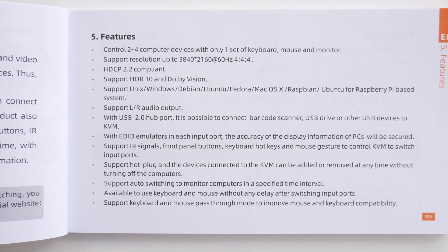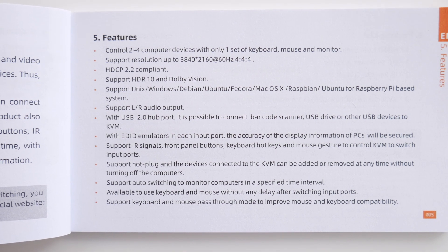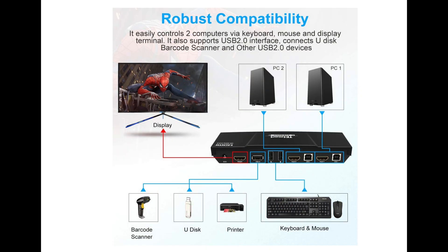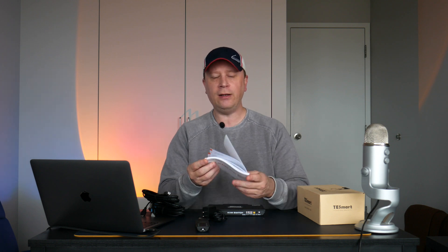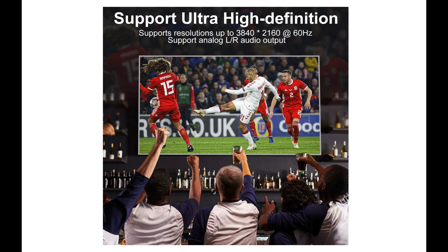It works with Linux, Windows, Debian, Ubuntu, Fedora, Mac OS — you name it. It supports left and right audio and comes with a USB 2.0 port where you can connect barcode scanners, USB drives, and other devices to the KVM. It has EDID emulators built in, so your screen display will be very accurate when you switch back and forth. The switching speed is really fast — it switches between both connected systems in about two or three seconds, including keyboards, so it won't go crazy on you.